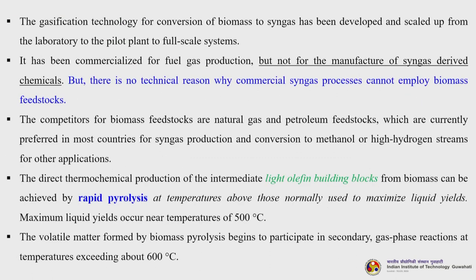The direct thermochemical production of light olefin building blocks from biomass can be achieved by rapid pyrolysis at temperatures above those normally used to maximize liquid yields. Maximum liquid yields occur near 500°C. The volatile matter formed by biomass pyrolysis begins to participate in secondary gas phase reactions at temperatures exceeding about 600°C. Using gas phase residence times of 0.5 to 1 second at temperatures above 500°C, the apparent rates of gas production from cellulose were measured for seven gas phases: CO₂, H₂, CO, methane, C₂H₄, C₂H₆ and C₃H₆.